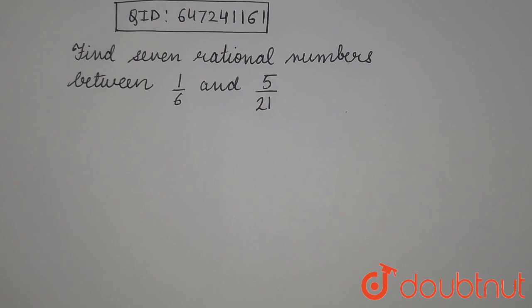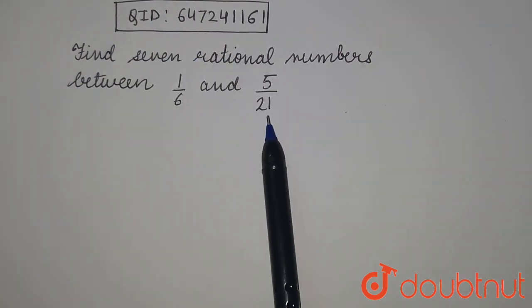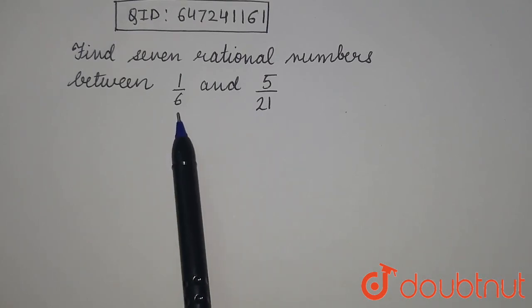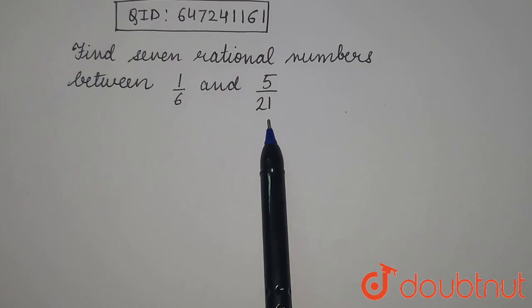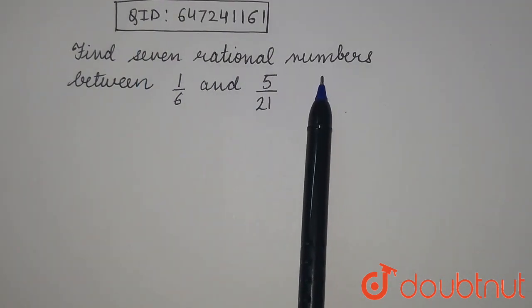So the question we have is, find 7 rational numbers between 1 by 6 and 5 by 21. What do we have to do in this question? We have two numbers, that is 1 by 6 and 5 by 21. In these numbers, we have to find out 7 rational numbers, right?